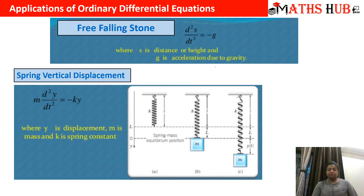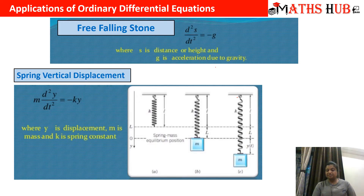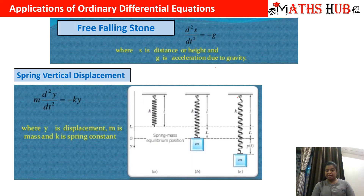The next application is spring vertical displacement. m d²y/dt² is proportional to y — that means whatever distance it gets displaced. When we remove the proportionality symbol, we get the proportionality constant as minus k, which is called the spring constant, and y is the vertical displacement covered by the mass m.